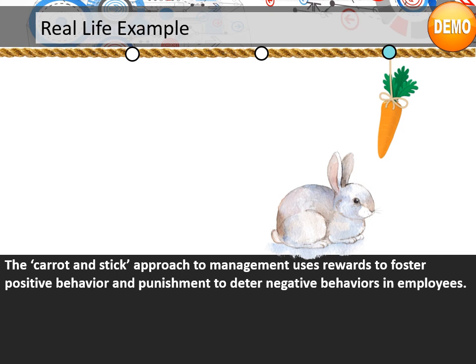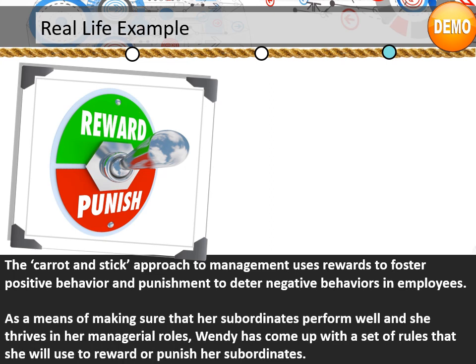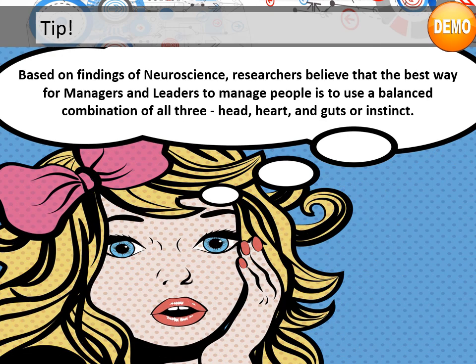The carrot and stick approach to management uses rewards to foster positive behavior and punishment to deter negative behaviors in employees. As a means of making sure her subordinates perform well and she thrives in her managerial role, Wendy has come up with a set of rules to reward or punish her subordinates. Here's a tip: based on findings of neuroscience, researchers believe that the best way for managers and leaders to manage people is to use a balanced combination of all three — head, heart, and guts or instinct.